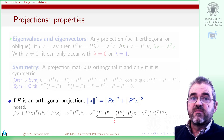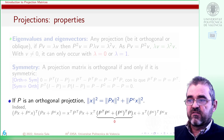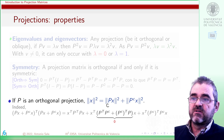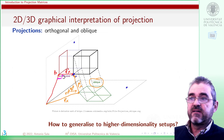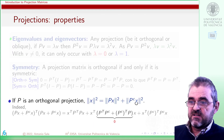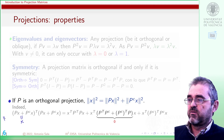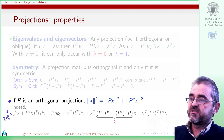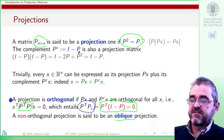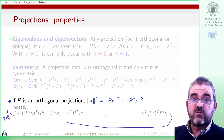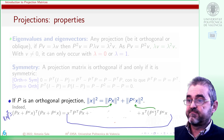Let us now prove something similar to Pythagoras' theorem. If P is an orthogonal projection, the square of the norm of x equals the sum of the squares of the norm of the projection and the norm of the complement. Graphically, this is a right triangle with a 90-degree angle. In general, x equals the projection plus its complement, so the norm squared of x expands to include cross-product terms. But if the projection is orthogonal, those cross-products are zero, leaving us with the square of the norm of the projection plus the square of the norm of the complement — Pythagoras' theorem for orthogonal projections.